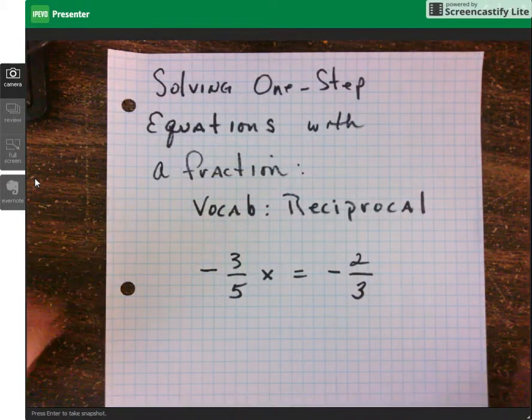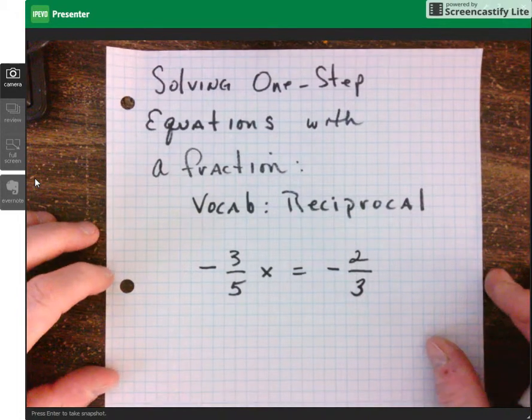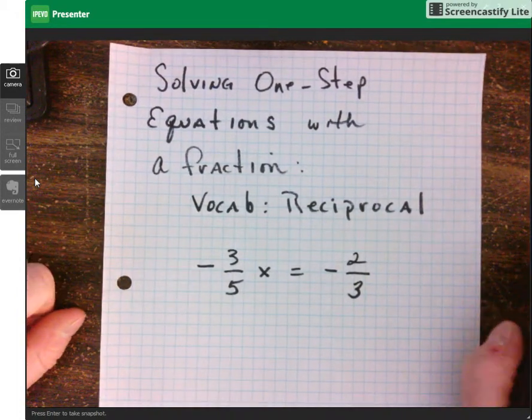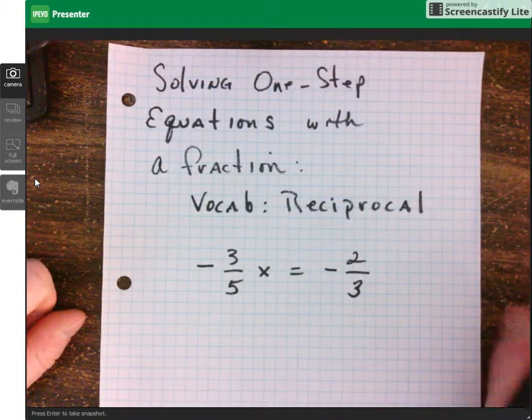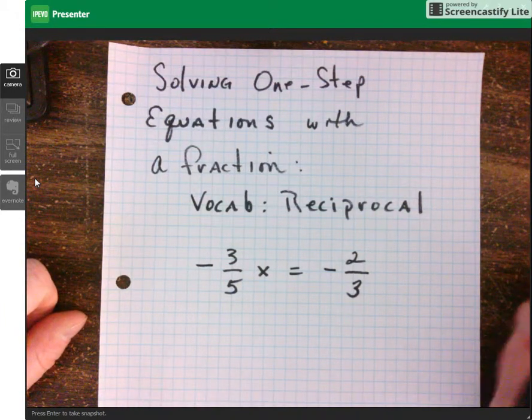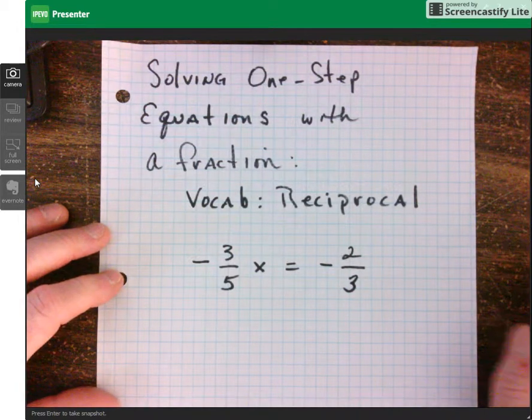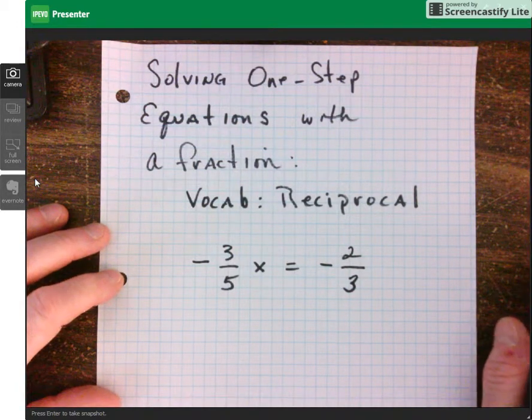Hello, and welcome back to 7th grade math here at Ritchie Middle School. Today we've got a problem that's going to show us how to solve a one-step equation using a fraction. And we should become familiar with the term reciprocal. We've got negative 3 fifths x equals negative 2 thirds.